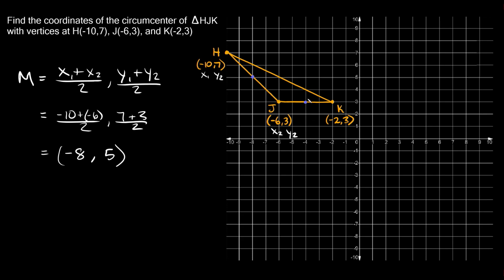The next thing we have to do is find the perpendicular bisectors through these two midpoints. The perpendicular bisector that runs through side JK is easy to find because that line is perfectly horizontal, so its perpendicular bisector is going to be perfectly vertical — running through that midpoint, giving us a 90-degree angle.